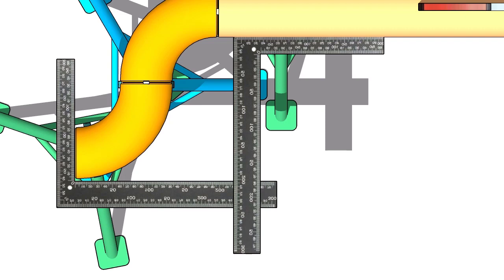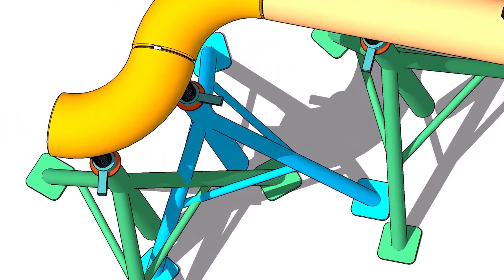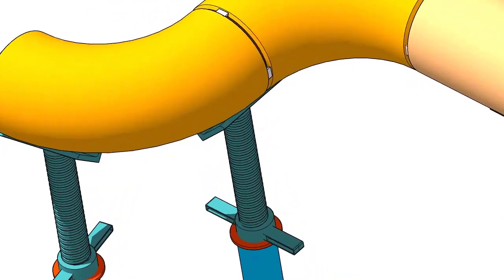Hold two right angles, one on the face of the elbow and one on the pipe side. Now use another right angle and check the squareness. Tack weld on both sides of the elbow.